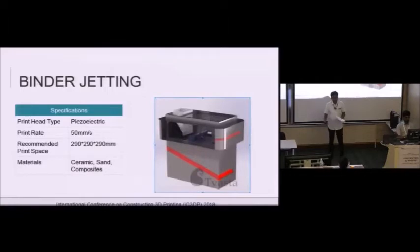Binder jetting was primarily done for automotive industry for making sand molds. They also wanted to try ceramics and gypsum, so we extended the same to this. The print head type is a piezoelectric print head. The scanning speed is about 50 mm per second. The size is 290 mm cubed at this point. We work on two types of binders: one is alcohol-based binders, and the second is water-based.